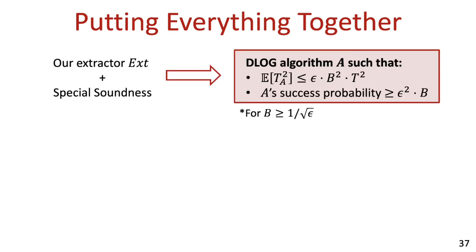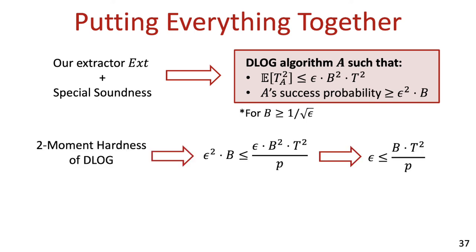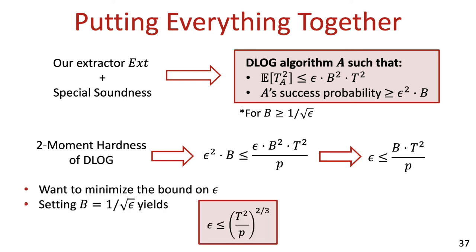Now we can put everything together. Using our extractor and the special soundness property of Schnorr's protocol, we obtain a discrete log algorithm with parameters essentially the same as those of the extractor. We then use our assumption on the second moment hardness of the D-log problem to argue that epsilon is bounded by b times t squared over p. Since we wish to minimize the bound on epsilon, we choose b to be as small as possible while still satisfying the condition that b is at least 1 over the square root of epsilon. Indeed, setting b to be exactly 1 over the square root of epsilon gives us the promised bound of (t squared over p) raised to the power of 2/3.